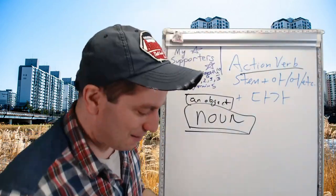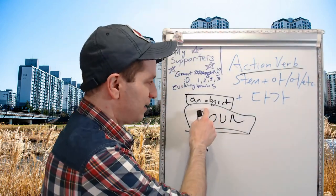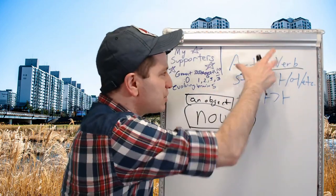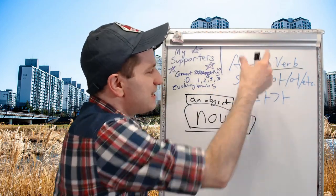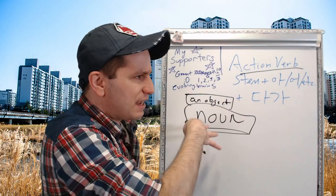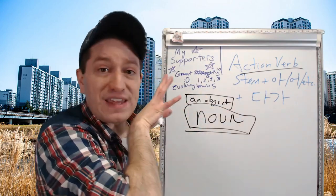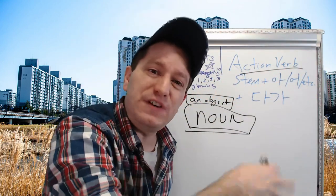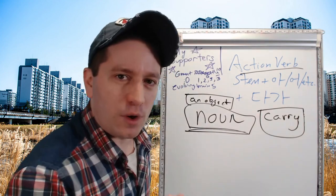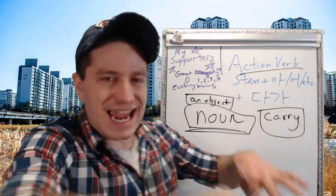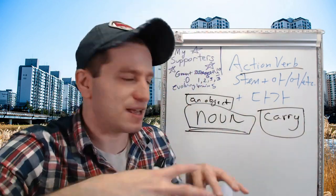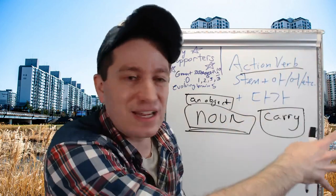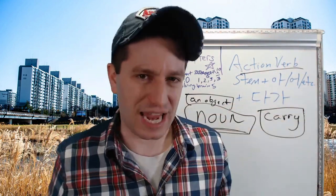When you have a noun being affected by the action verb, the action verb is doing something to that noun and then moving that noun to another location where it finishes with it. When you're using this form, you're carrying a noun — you're carrying something, or whoever's doing this is carrying something and bringing it to another location.